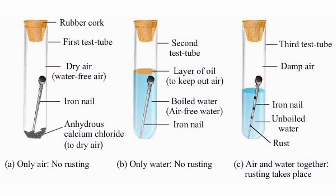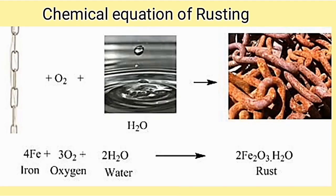So from this activity, we can see that the conditions required for rusting are the presence of oxygen from air and water, water vapor, or moisture. The chemical equation for rusting can be presented as: Fe + oxygen + water → Fe₂O₃, which is iron oxide.